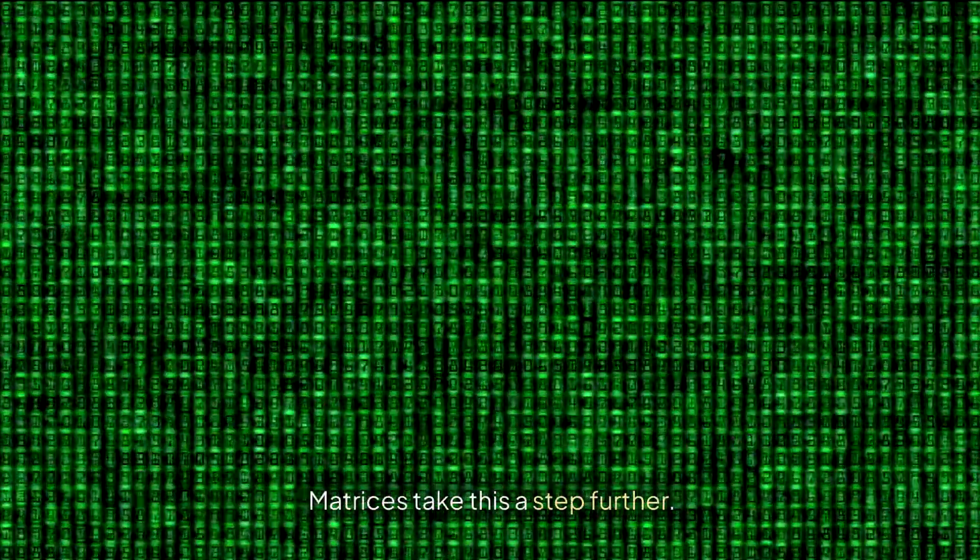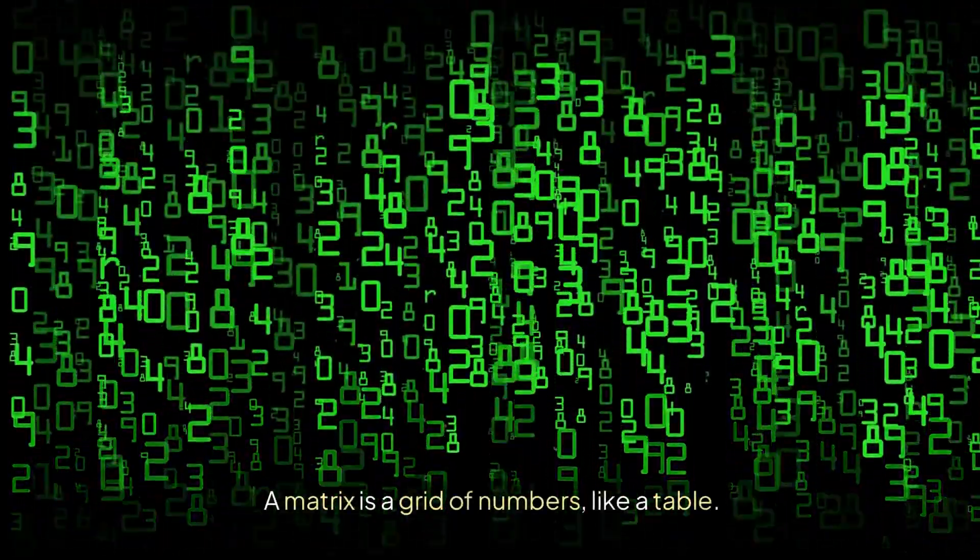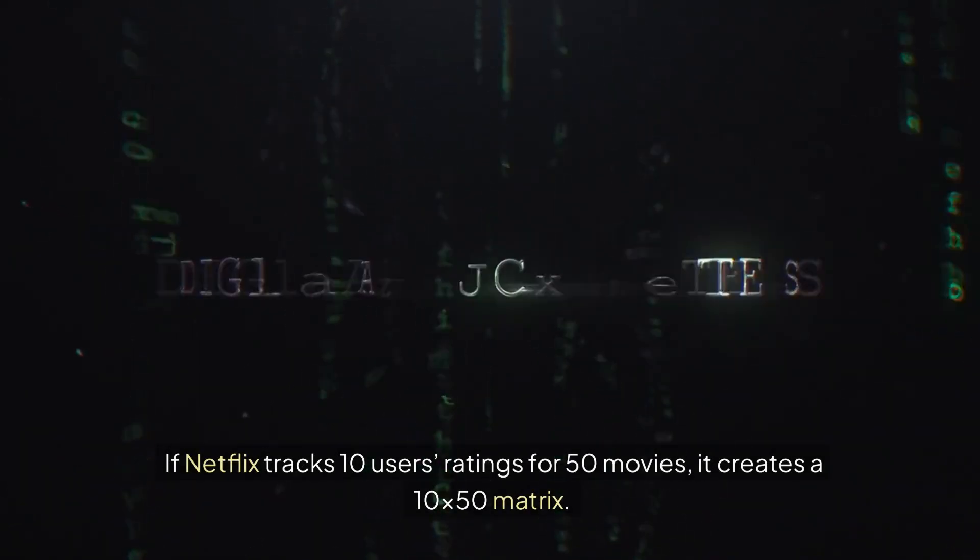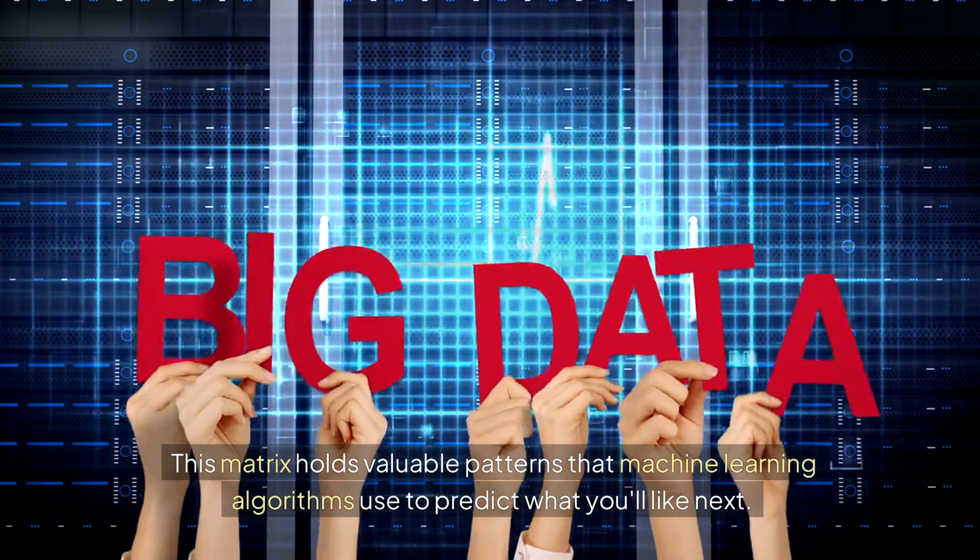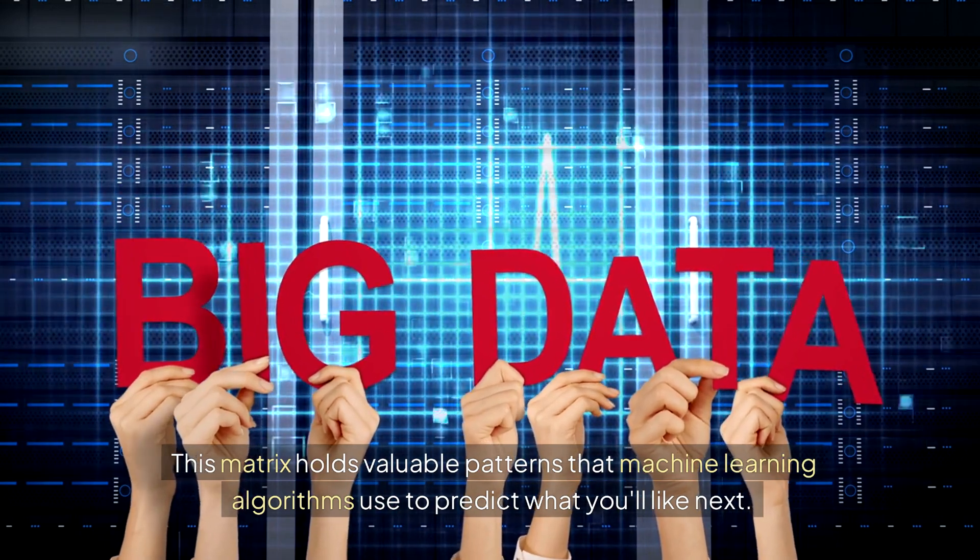Matrices take this a step further. A matrix is a grid of numbers, like a table. If Netflix tracks 10 users' ratings for 50 movies, it creates a 10 by 50 matrix. This matrix holds valuable patterns that machine learning algorithms use to predict what you'll like next.